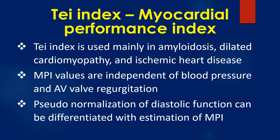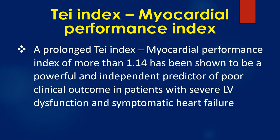Tei index is used mainly in amyloidosis, dilated cardiomyopathy, and ischemic heart disease. MPI values are independent of blood pressure and AV valve regurgitation. Pseudo-normalization of diastolic function can be differentiated with estimation of MPI. A prolonged Tei index of more than 1.4 has been shown to be a powerful and independent predictor of poor clinical outcome in patients with severe left ventricular dysfunction and symptomatic heart failure.